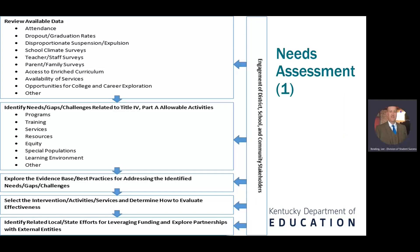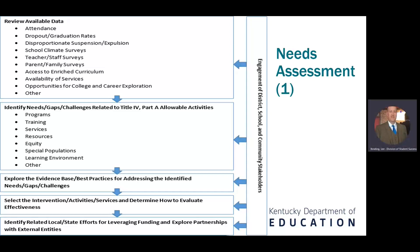This flowchart demonstrates how the needs assessment process should go when evaluating needs and determining how to best utilize funds. The district will review available data like surveys and available services, then look at the needs or challenges related to Title IV Part A allowable activities. Next, explore best practices to address the identified needs and challenges, then select an intervention or activity to address the identified need, and finally leverage funding and explore any partnerships with outside agencies. Stakeholders should be included throughout this process.